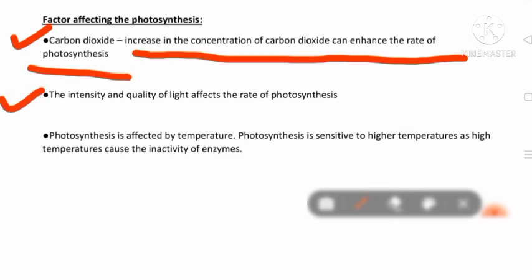Second factor: the intensity and quality of light also affect the rate of photosynthesis. If the intensity of sunlight is not properly received by the plant, photosynthesis will not occur properly. That is why the intensity of light is very important.